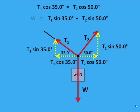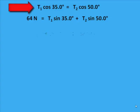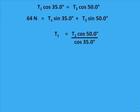Now we solve the equations. I'll start with the horizontal equation and isolate T1. I'll bring cosine 35 to the other side and divide T2 cosine 50 by cosine 35. Working that out, I find what T1 is in terms of T2.